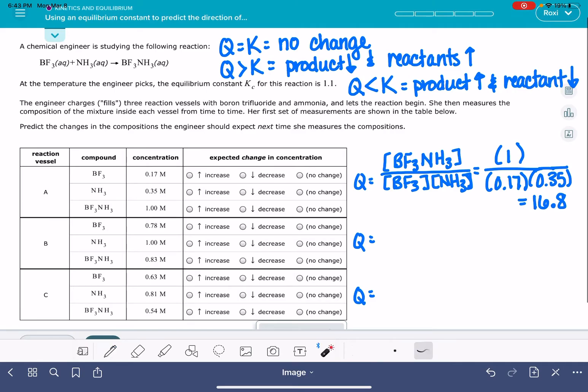Okay, so for this one, our Q was too big. That means our product needs to decrease, and our reactants need to increase. And then we're just going to repeat this problem for the other two data sets.